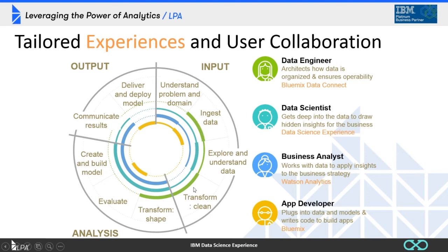The colors in the collaboration wheel represent different personas. Data engineers are mostly interested in ingesting and transforming data, though they still need to explore and understand it to know how to clean it. Data scientists are pulling data in, ingesting, and transforming it all the time — that's part of what they do.